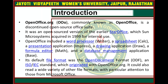Let's start with the Introduction of Open Office. OpenOffice.org, that is OOO, commonly known as OpenOffice, is a discontinued open source office suite. It was an open source version of the earlier StarOffice, which Sun Microsystems acquired in 1999 for internal use. OpenOffice included a word processor, spreadsheet, a presentation application, a drawing application, a formula editor for math functions, and a database management application, that is BASE.